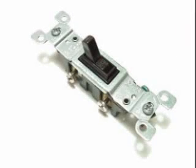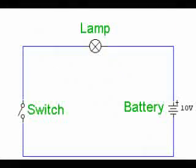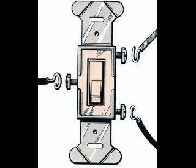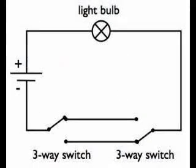This light switch is a single pole single throw, or SPST switch. It has only two connection terminals and is suitable for controlling lights that have only one switch. Some light switches have three connection terminals — they are single pole double throw, or SPDT switches. They are commonly called three-way switches and are used for controlling lights with two switches at different locations.